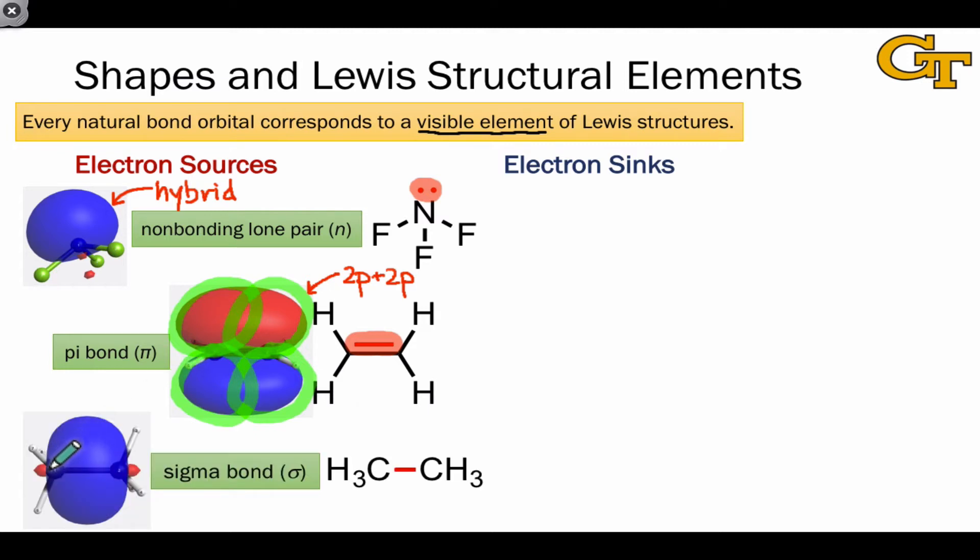Every single bond within Lewis structures corresponds to a sigma bonding orbital, and we can see that this is constructed through the overlap of two hybrids, as shown here, or as we saw in the last video, from the overlap of a hybrid with an atomic orbital. It's worth paying attention to these little nubs of opposite phase on the backside of the sigma bonding orbital. Every time we see a single bond within a Lewis structure, we should visualize this sigma bonding orbital between the pair of bonded atoms.